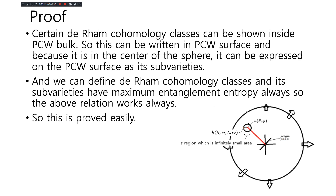Proof: certain de Rham cohomology classes can be shown inside a PCW bulk, so this can be written on a PCW surface. And because it is in the center of the sphere, it can be expressed on the PCW surface as each sub-variety. We can define the de Rham cohomology classes, and each sub-variety has maximum entanglement entropy always. So the above relation works always — and this is proved. It works!